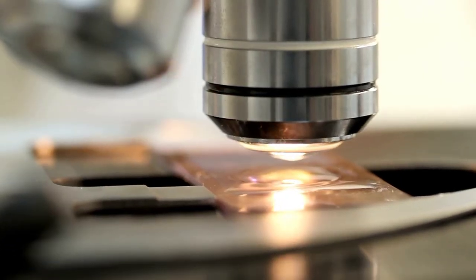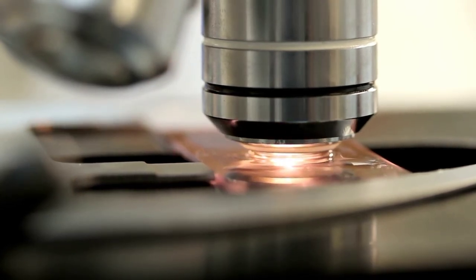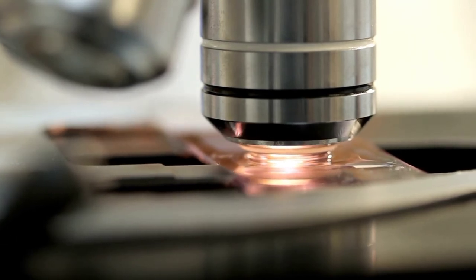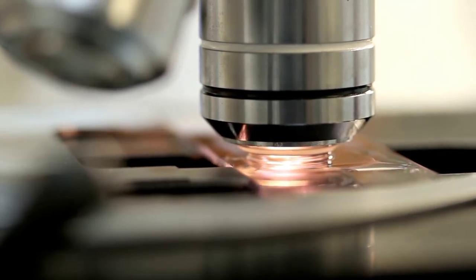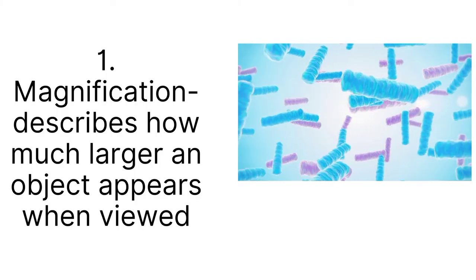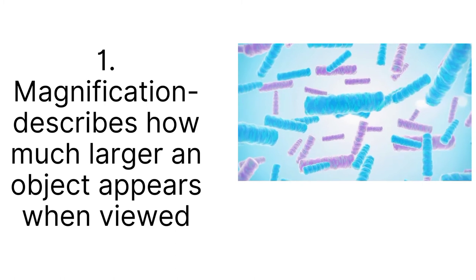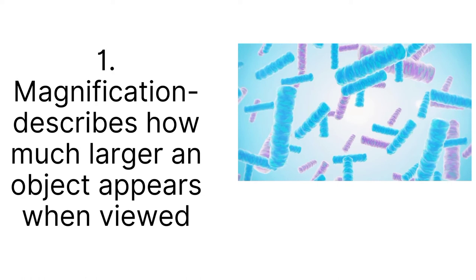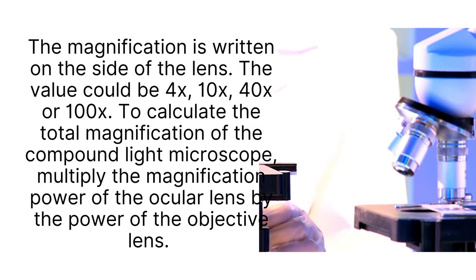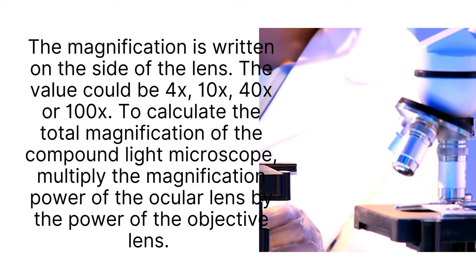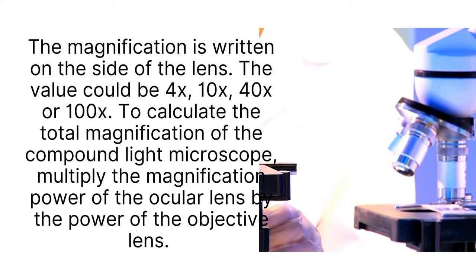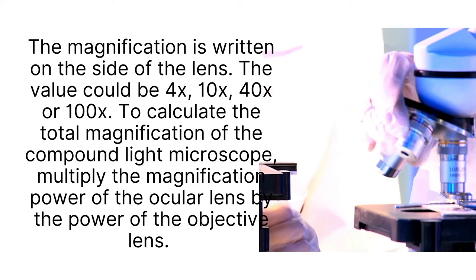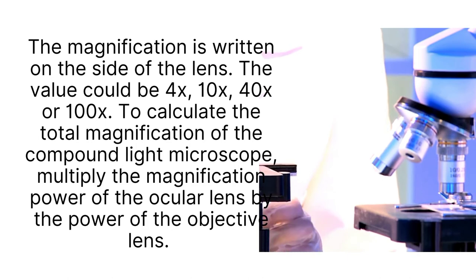What makes a microscope determine how clearly a small object can be viewed? Microscopes have different resolutions and magnifications in order to magnify an object. Magnification describes how much larger an object appears when viewed. This means it shows how much an object is magnified from its normal appearance. The magnification is written on the side of the lens. The value could be 4x, 10x, 40x, or 100x. This means that an object is magnified several times.